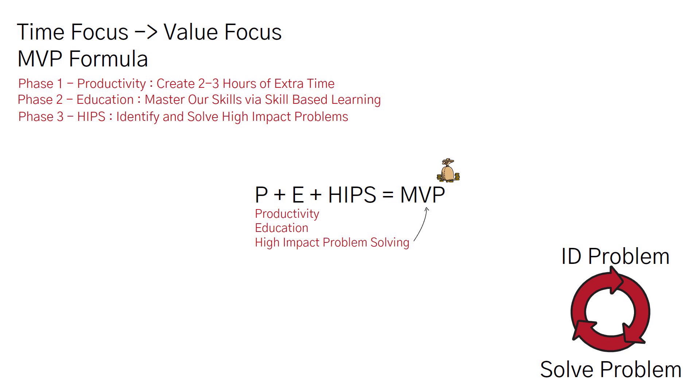And so that is the MVP formula: productivity phase one, education phase two, high impact problem solving phase three. And that will convert you into the MVP, that will create the MVP flywheel. And that will allow you to go from this time focus to this value based focus, which will absolutely skyrocket the value you're adding to your department and to your company. And that is what leads to them giving you the raises, giving you the promotions, or giving you the leverage to demand those raises and promotions.